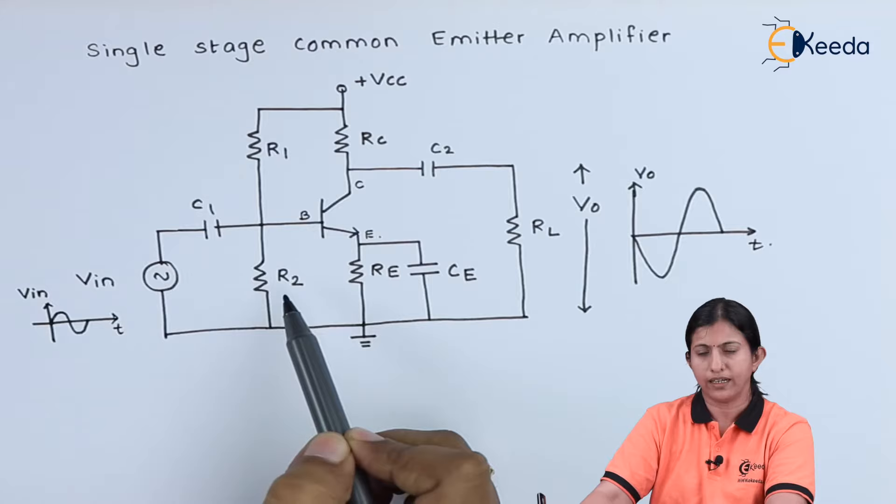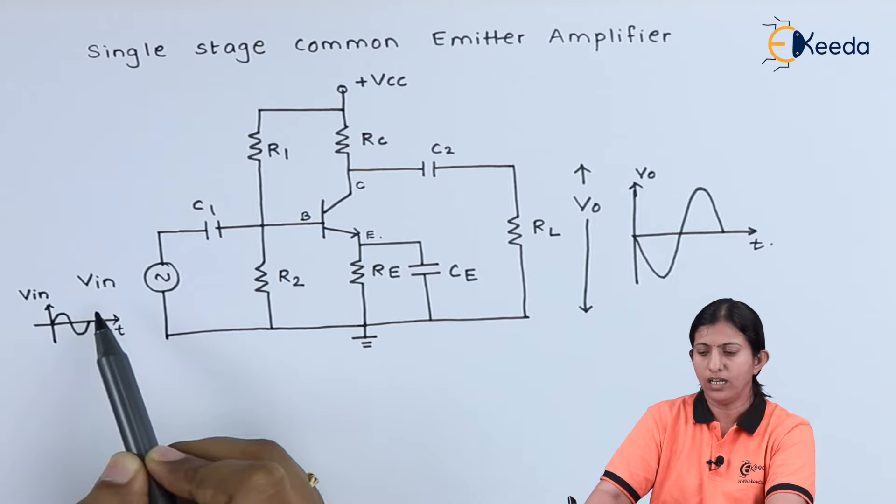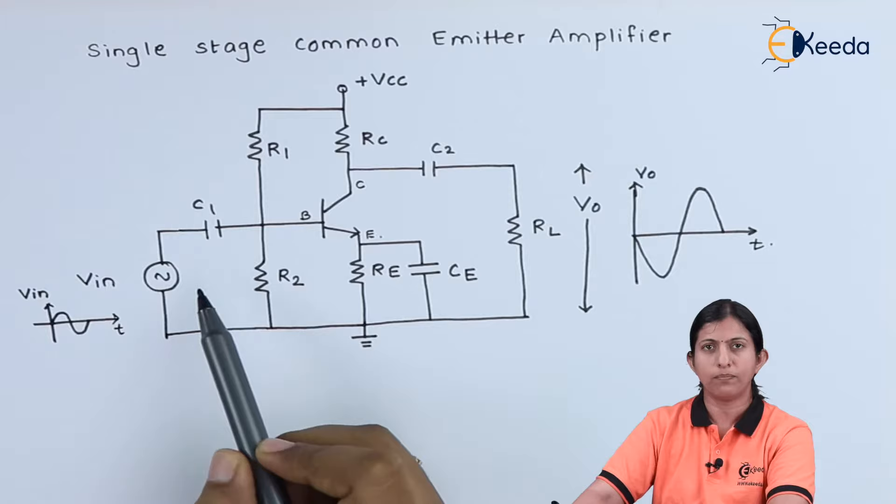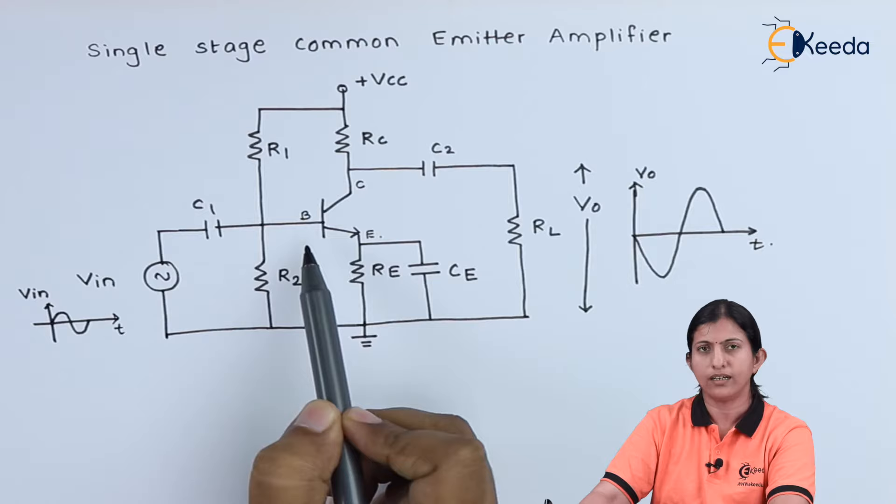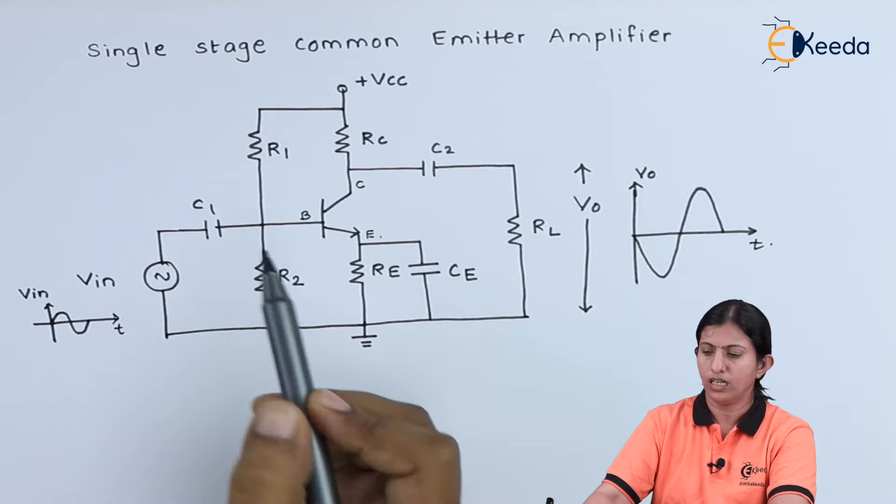In this operation of the circuit diagram, we are applying Vin, that is AC input signal. This input signal is a weak input signal. When we are not applying any input signal to this transistor, the current flow because of VCC is called DC current or quiescent current.